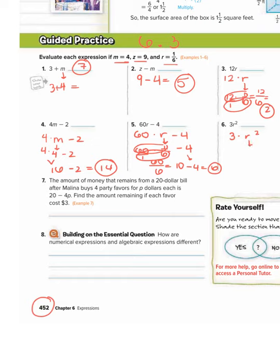r is 1/6. So 3 times 1/6 squared. Now remember, we need to do exponents first, order of operations. So 1/6 squared is 1/6 times 1/6. 1 times 1 is 1. 6 times 6 is 36. So that's 1 over 36.